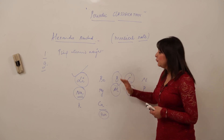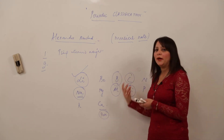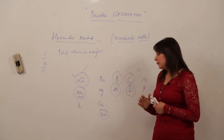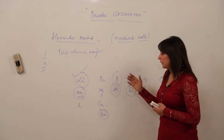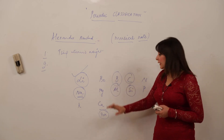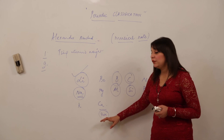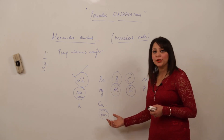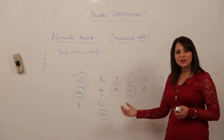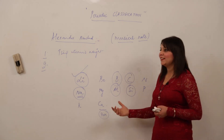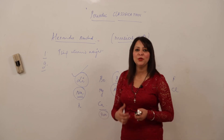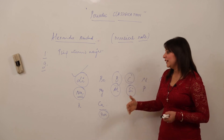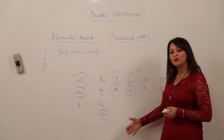At that time only fewer elements were known. But this classification was also discarded because Newlands was able to arrange only lighter elements — up to atomic mass 40. He was unable to arrange elements with greater atomic mass, so this classification failed. However, it was an interesting attempt because no scientist before him had related chemistry to music. He related chemistry with musical notes and made a worthy effort, but it ultimately failed.